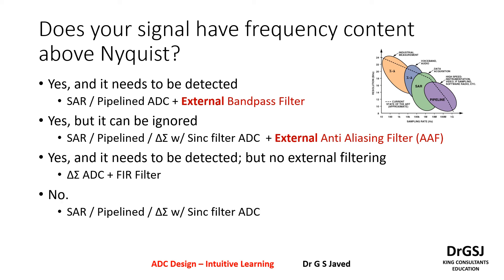But if you really do not want to have any frequency content or Nyquist frequency content in it, then like in the previous option, you can either use SAR pipeline or the delta sigma ADC with a sync filter. In this particular condition, you really do not need an anti-aliasing filter because you do not have any frequency content beyond Nyquist.